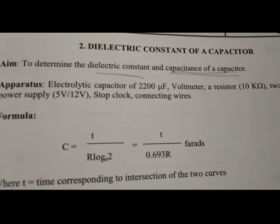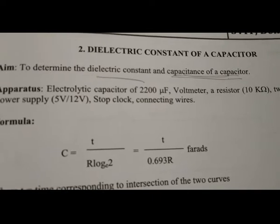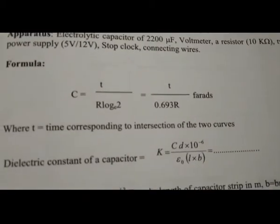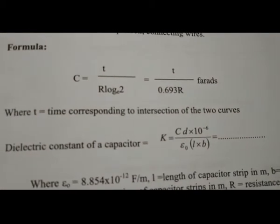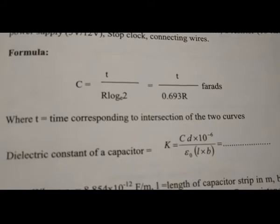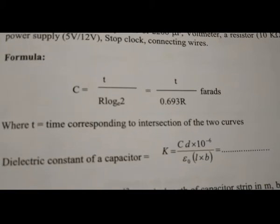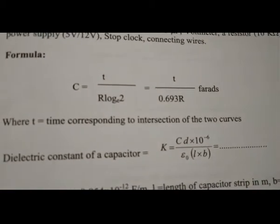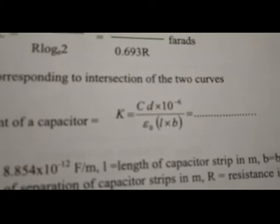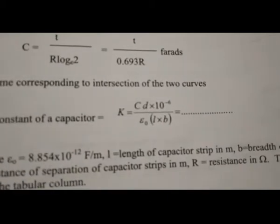The apparatus required for this experiment are an electrolyte capacitor, a voltmeter, a resistor, a two-way plug key, and a power supply. The formulas used are: capacitance C equals t divided by R times log 2, which equals t divided by 0.693R; and the dielectric constant k equals C·d times 10 to the power minus 6, divided by epsilon-naught times length times breadth.